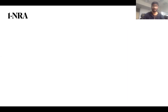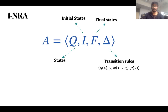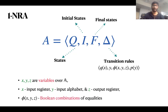For the sake of presentation I will define only the non-deterministic register automata with one register. It is set up with a finite set of states, initial states, final states, and some finite set of transition rules. Variables x, y, z range over atoms: x denotes the value of the input register, y denotes the input letter, and z denotes the output register of a transition rule. phi denotes the equalities between the input value, input letter, and output register.